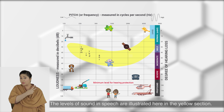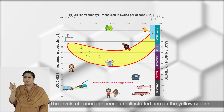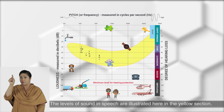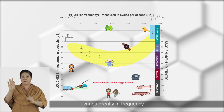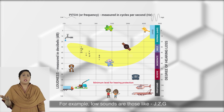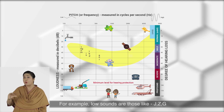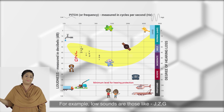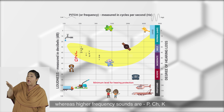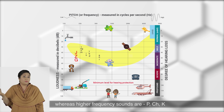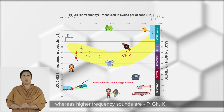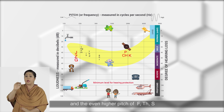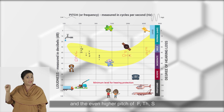You can see some examples in what is called the speech banana. The levels of sound in speech are illustrated here in the yellow section. Although speech is in a similar range of loudness, it varies greatly in frequency. For example, low sounds are those like j, z, g, whereas higher frequency sounds are p, ch, k, and then the even higher pitched f, th, s.